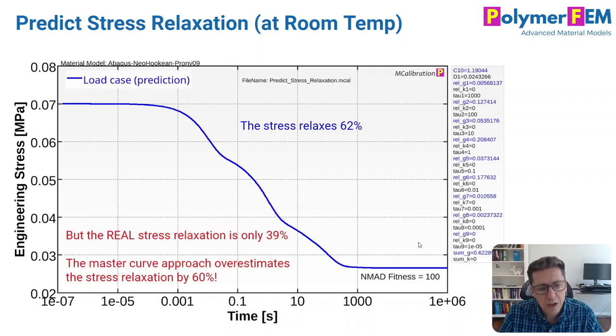It's stress relaxed 62 percent according to this prediction. But I can tell you now that the actual relaxation in this case should have been 39 percent, not 62. So the master curve approach that I just went through had an error that's close to 60 percent. It's terrible. It's a very inaccurate prediction of the stress relaxation response of this material. So this is what people often do, and I'm saying here that this is not always right. It can be very inaccurate.